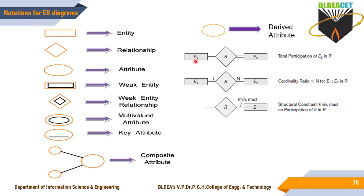E1 is an entity represented using a rectangle, and E2 is another entity. These two entities are related using relationship R. On one side a single line is used — single line indicates partial participation. Double line indicates total participation. For cardinality ratio, if you want to specify 1:N, then on the entity 1 side you place 1 and on the entity 2 side you place N.